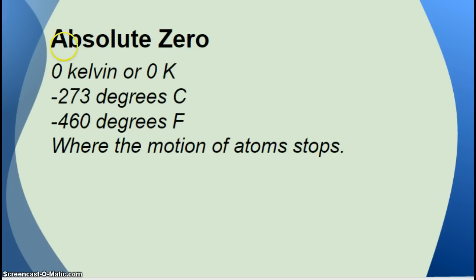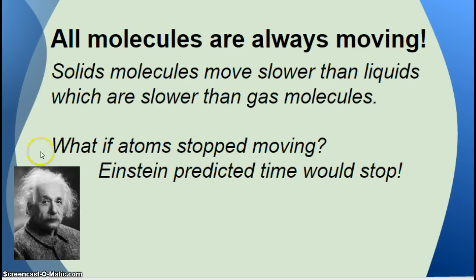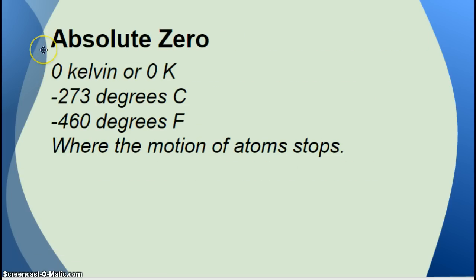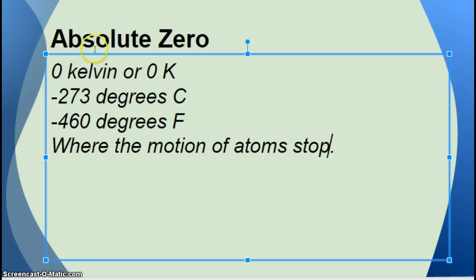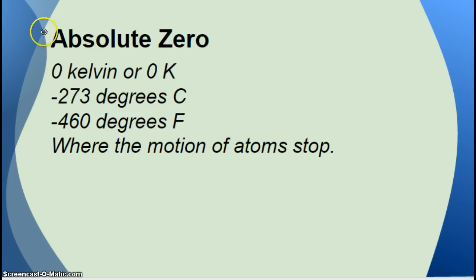We call the fact that when molecules are going to stop moving, we say that's going to happen at absolute zero. Absolute zero is specifically zero Kelvin, or negative 273 degrees Celsius, or negative about 460 degrees Fahrenheit. The definition of absolute zero would be where the motion of atoms stop. So when atoms actually stop moving, that only happens at absolute zero, which is zero Kelvin.